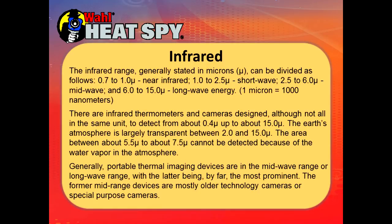There are infrared thermometers and cameras designed to detect from about 0.4 up to 15 microns. The Earth's atmosphere is largely transparent between 2 and 15 microns. The area between 5.5 to about 7.5 microns cannot be detected because of water vapor in the atmosphere — whatever wavelengths are in that band, they're absorbed by the water. Generally, portable thermal devices are either in the midwave range or longwave range, with the latter being the most prominent. Midrange devices are mostly older technology or special-purpose cameras.